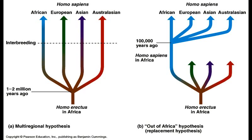This can be taken to an extreme, which is called the polygenism theory. This states that humans in different regions evolved from entirely independent species, and that different groups of humans are in fact different species to each other — which is, of course, entirely ridiculous.